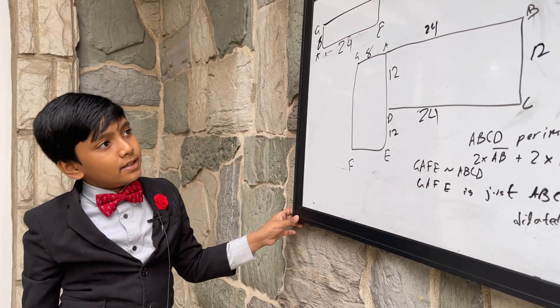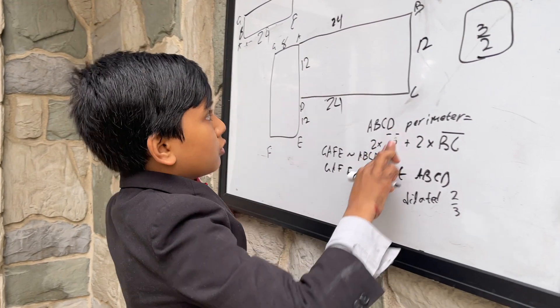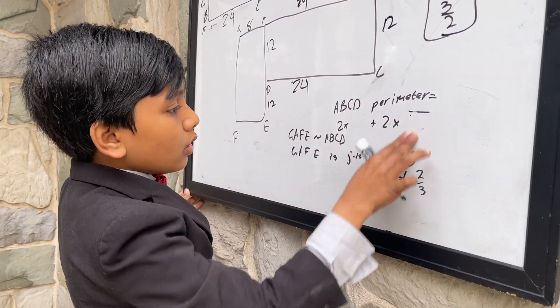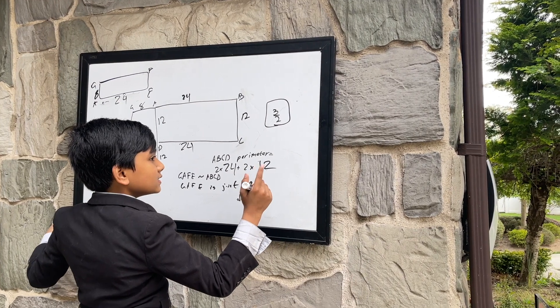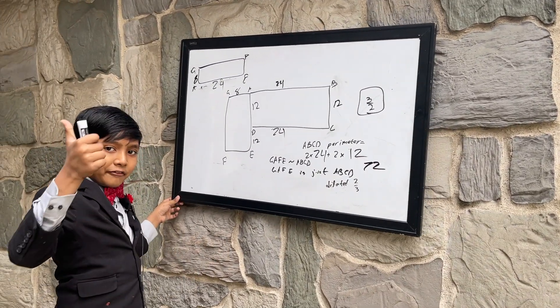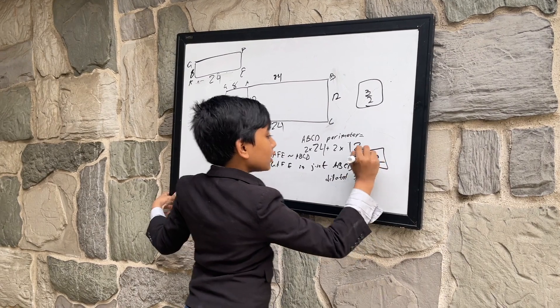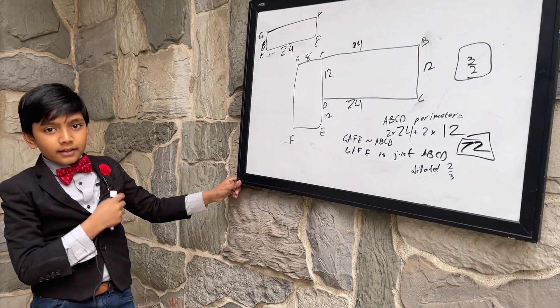So, AB and BC, we've already got them. So, 2 times 24 plus 2 times 12. Total of 72! Thank you, everybody, for watching, and we'll see you next time.